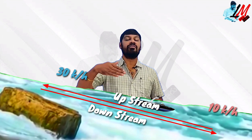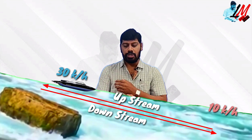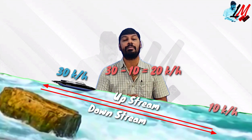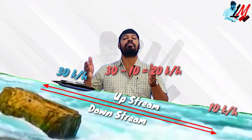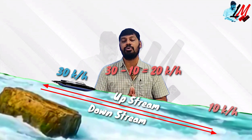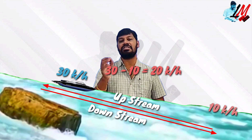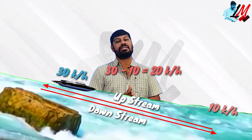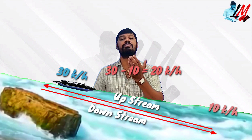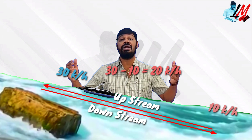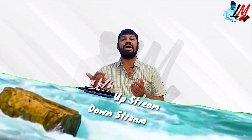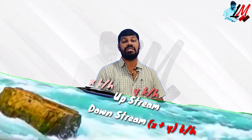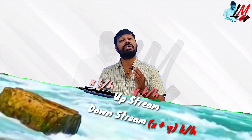Now, when the boat travels against the water flow — upstream — the water flow is 10 km/h and boat speed is 30 km/h. These two are subtracted, so the resulting upstream speed is boat speed minus water speed. The speed along downstream is x plus y, and upstream is x minus y.